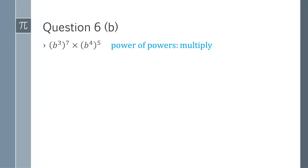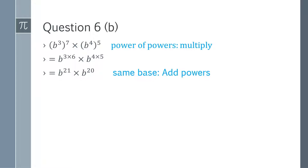Question 6b: (b³)⁷ multiplied by (b⁴)⁵. We apply the rule of power of power and multiply the powers. There was a mistype — it should be 3 multiplied by 7, which gives b²¹, and b⁴ multiplied by 5 gives b²⁰. Now applying the multiplication rule, we add the powers: b to the power 21 plus 20, which equals b⁴¹. That is the answer for question 6b.